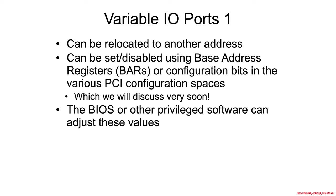A particular peripheral, such as a network card or graphics card, could use a mechanism called base address registers in PCIe in order to set up the access ports for that particular device by locating them somewhere in the IO address space. We'll see an example of this later on.